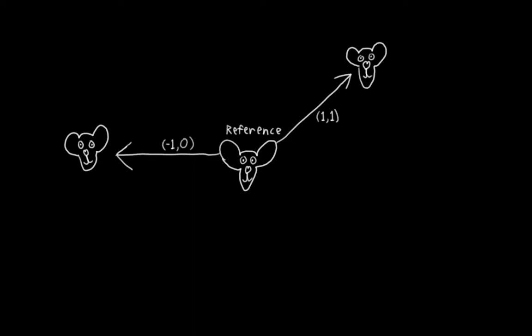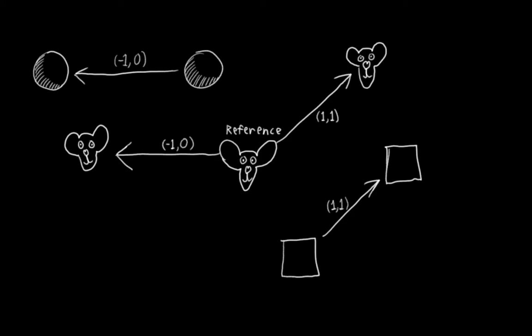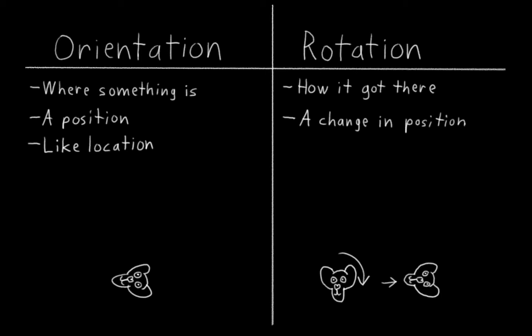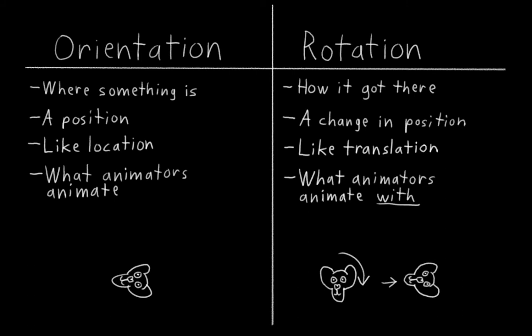We choose an arbitrary reference location, and then we specify other locations with a translation vector from that starting point. But you could, if you wanted, apply that same translation to any location. So orientation is like location. It's simply a position. And rotation is like translation. It's a change in position. And if we think about animators for a moment, they're really animating the locations and orientations of objects, not their translations and rotations. But they're using translations and rotations to specify those locations and orientations. Most animators, of course, never think about this distinction, and for the most part, they shouldn't have to.